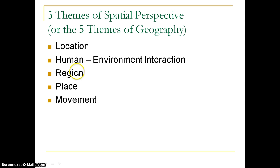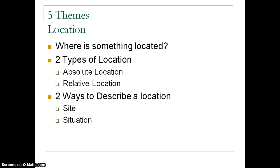The five themes are: location, human environment interaction, region, place, and movement. These are really just five different ways that we can consider geography — the study of geography and people and the way that they interact with their space. The first one we're going to talk about is location, because as we discussed in our previous video, we talked about this idea of the 'why of where.' So first we need to discuss the where portion — how do we describe the where?